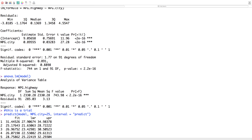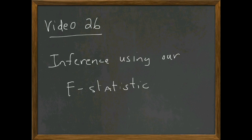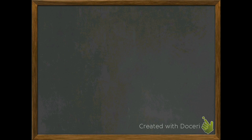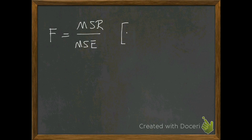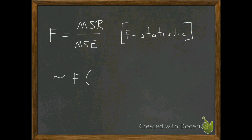Let's go back to the chalkboard and get into inference using the F-statistic. First, let's recall that F is the mean square for the regression over the mean square error. The F-statistic follows the F-distribution with degrees of freedom 1 and n minus 2. To make an inference on F, we need to examine the expected value.